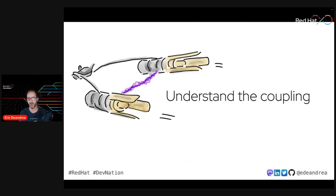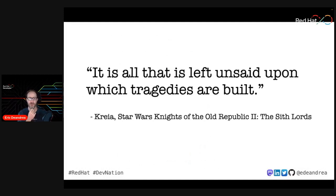Coupling isn't necessarily a bad thing — it's usually required in most cases. Think about the pod racer from Star Wars: there are two different kinds of coupling — the cable between the racer and the pods, and the electrical link between the pods. Without either of those it won't work. But a lot of times the problem is you don't know where that coupling is, and not knowing where it is is what makes things fail.